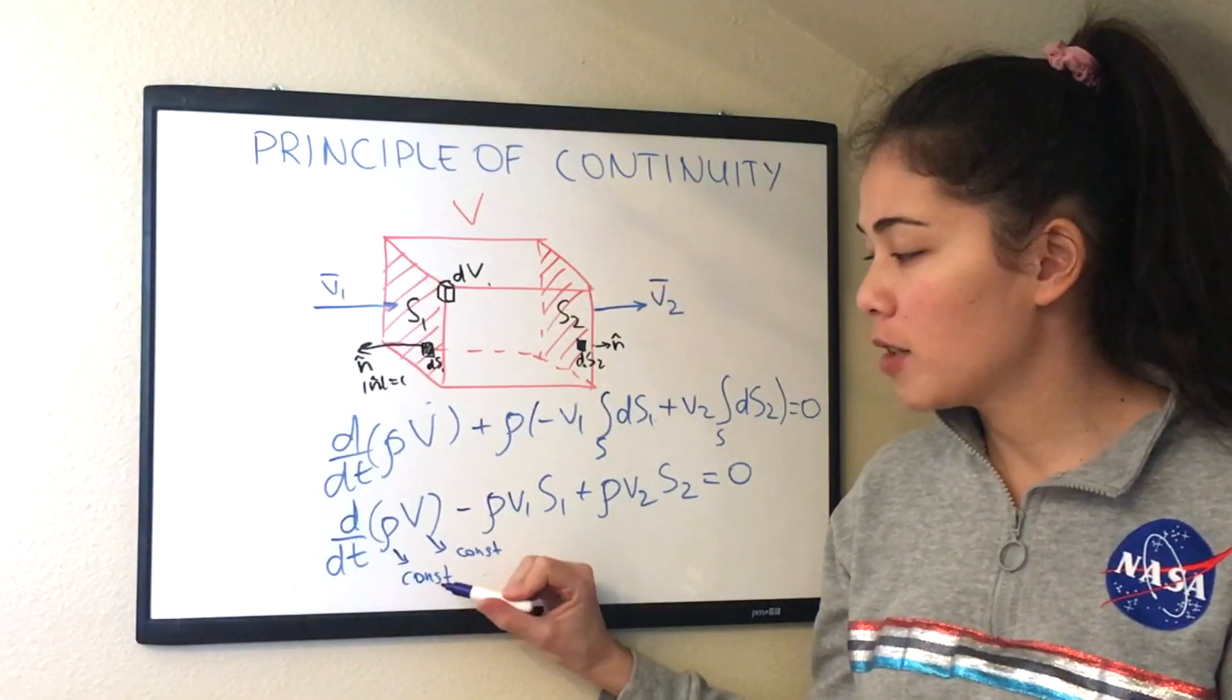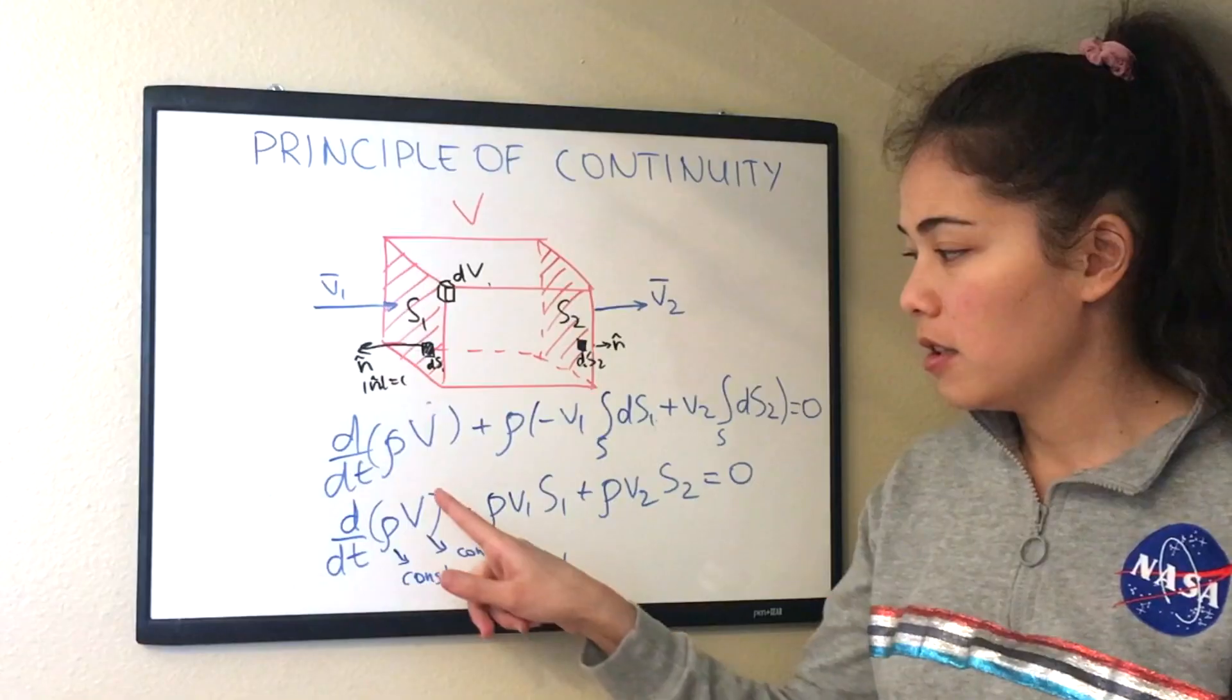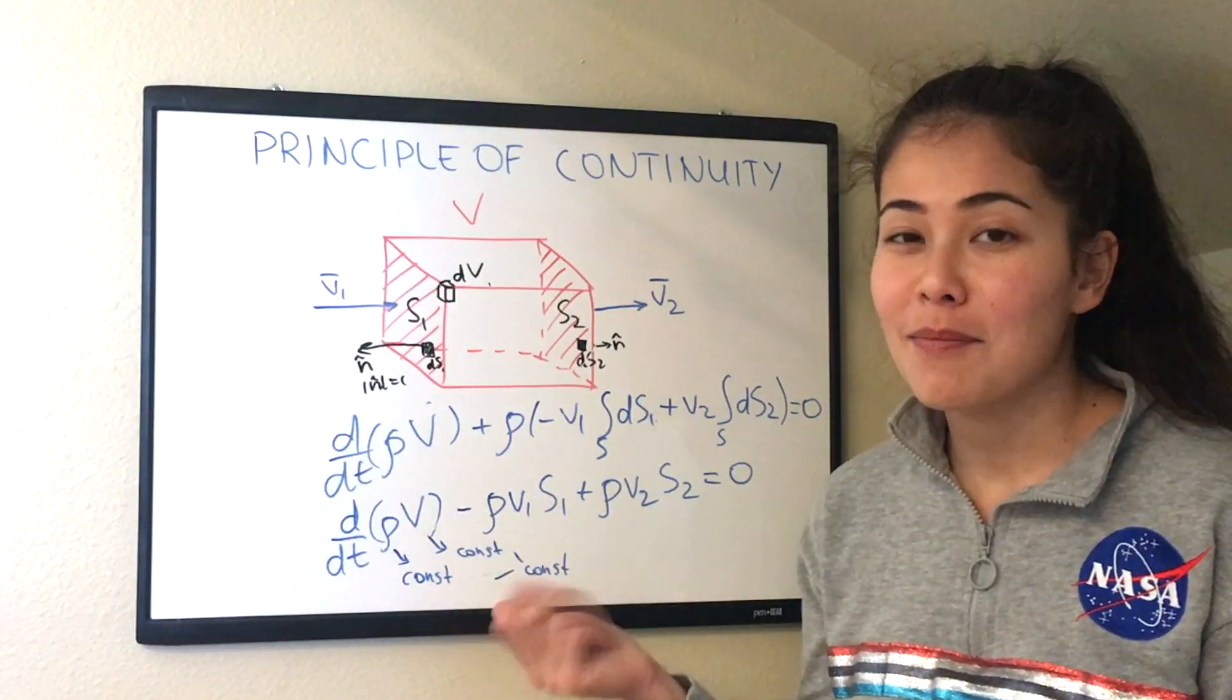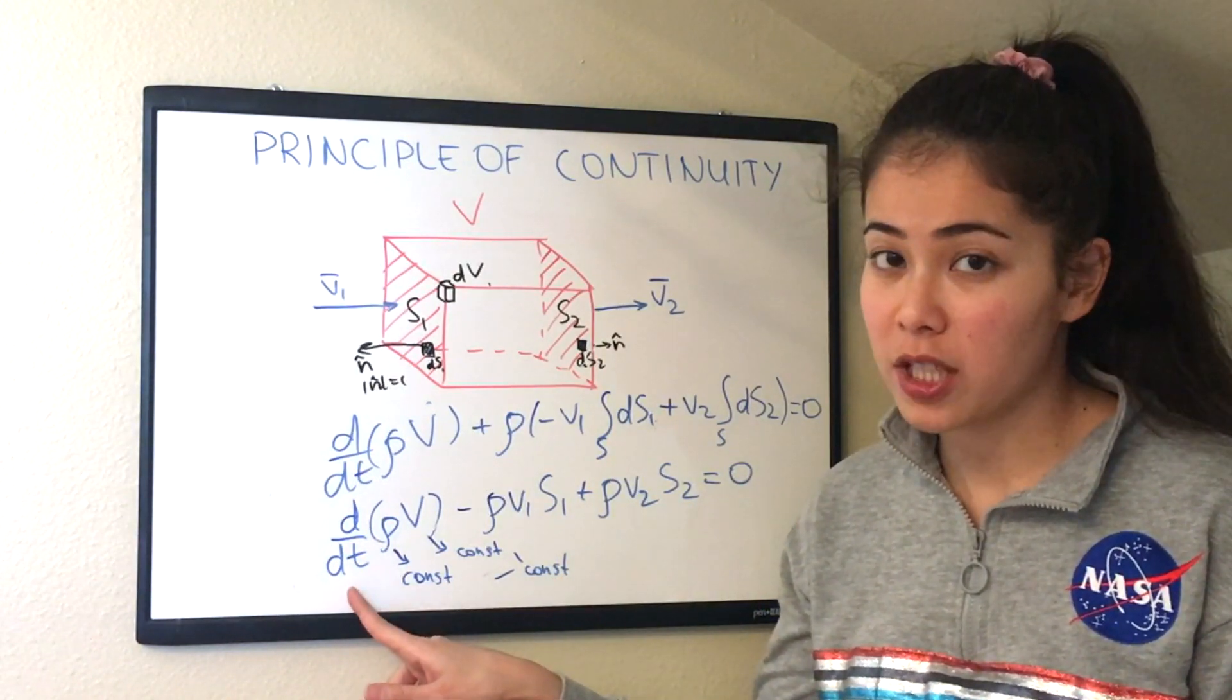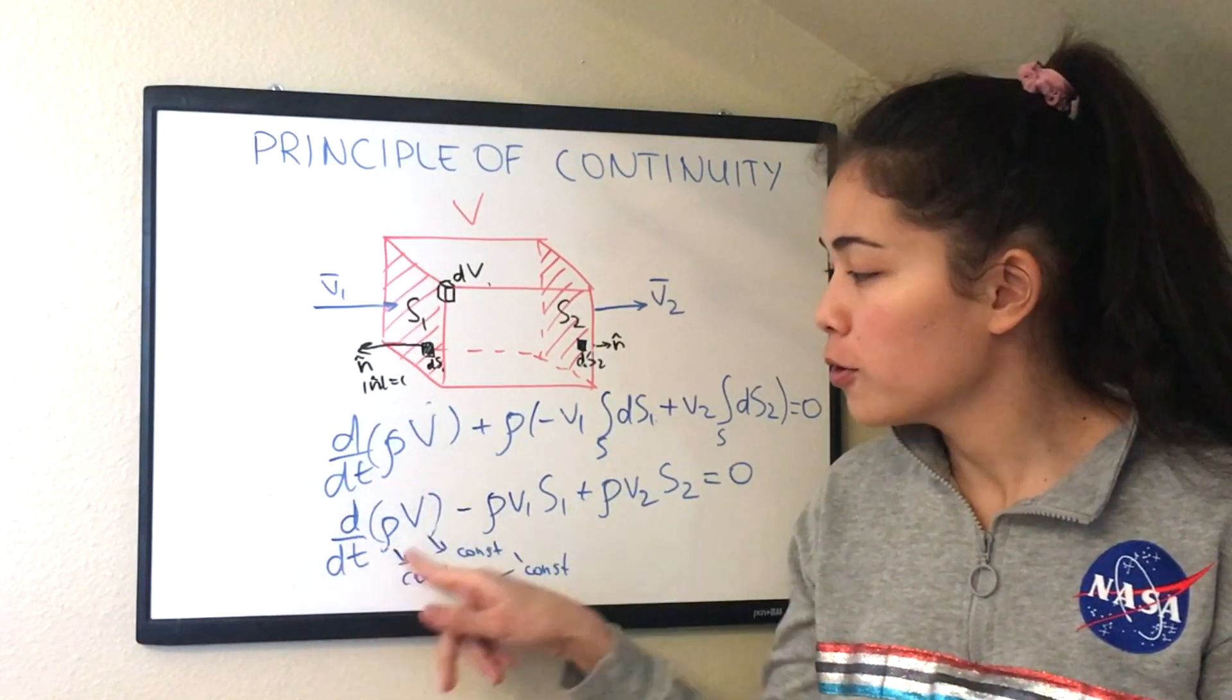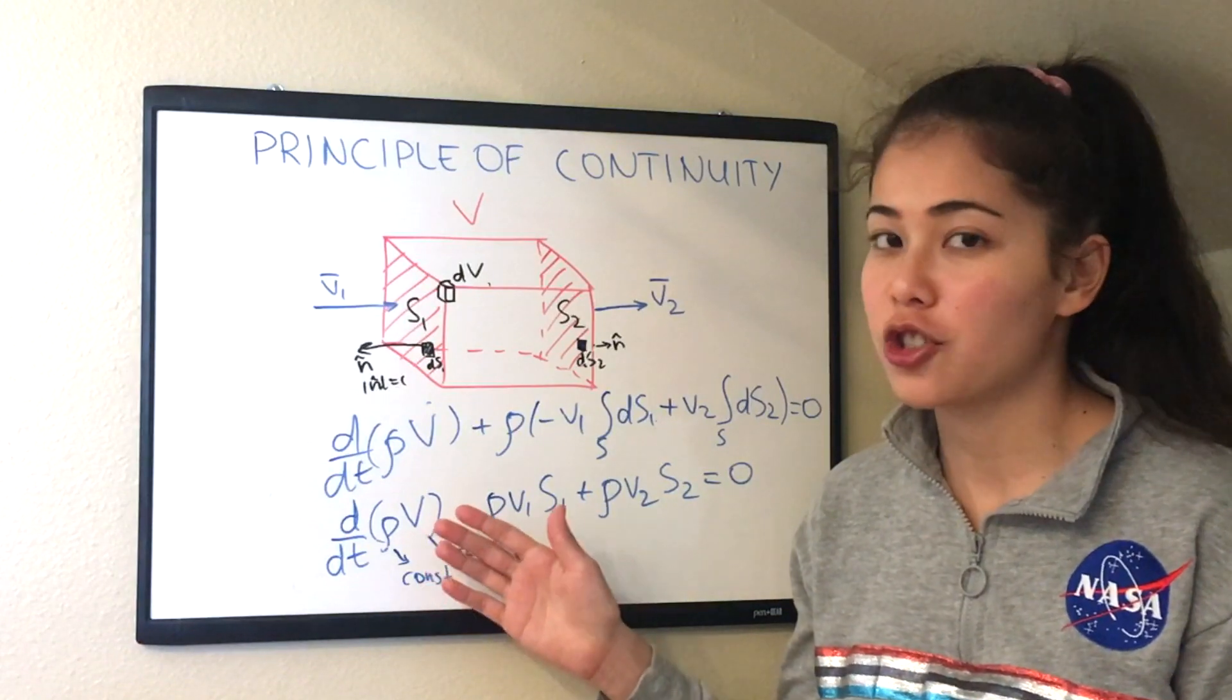And what happens when we multiply a constant by a constant? We will get another constant. So the expression inside these brackets is a constant. And what does a constant mean? Constant means it doesn't change. So when we take the derivative with respect to time, our constant inside will not change. And this means mathematically that this whole term will be zero. Because the change in density and the change in volume is zero. It's not changing.